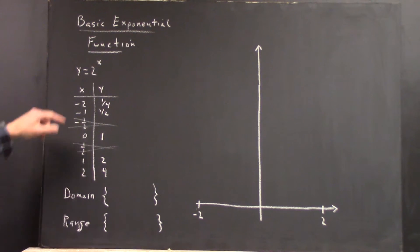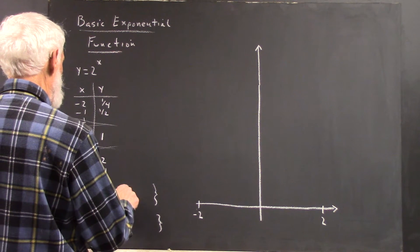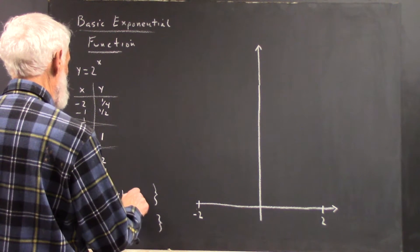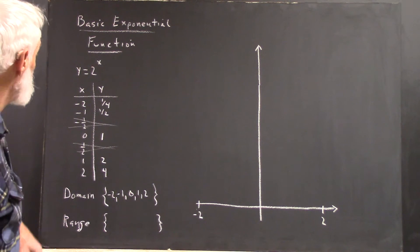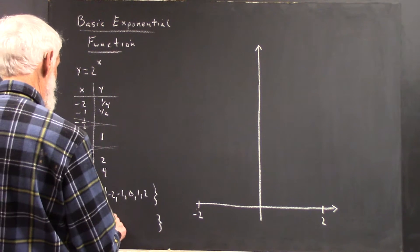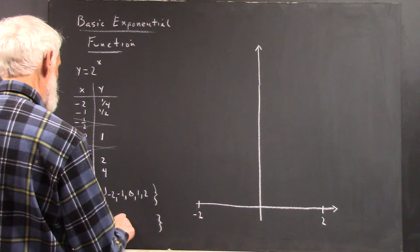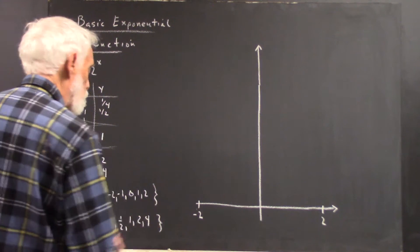So, our domain consists of negative 2, negative 1, 0, 1, and 2. Our range is the set of y values, and that would be the set 1 fourth, 1 half, 1, 2, 4.